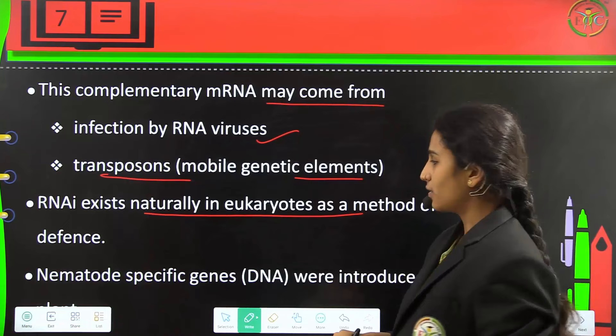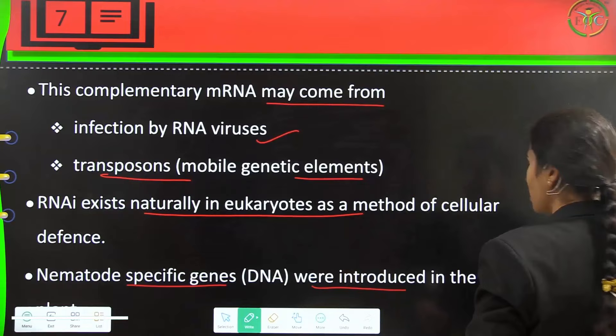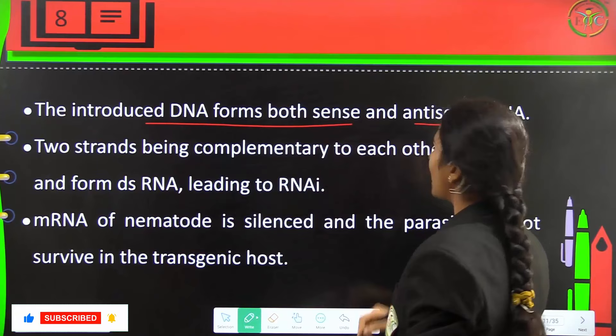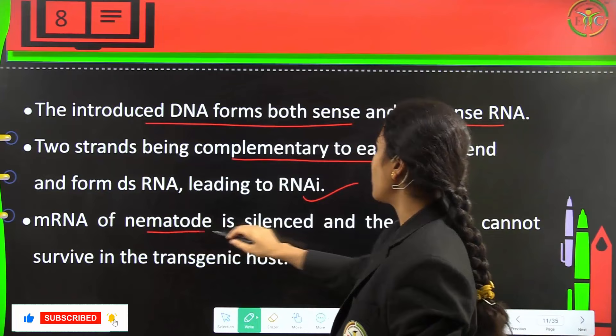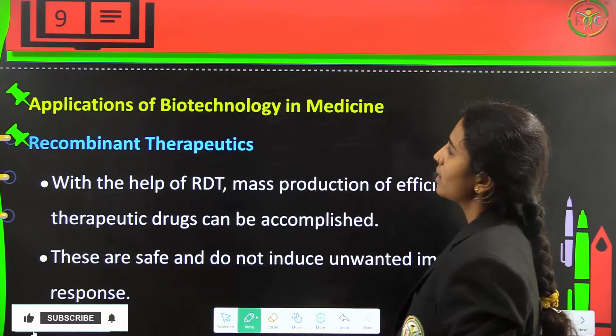Nematode-specific genes were introduced into the host plant. The introduced DNA forms both sense and antisense RNAs, and the two strands being complementary to each other bind and form double-stranded RNA, leading to RNAi. The mRNA of the nematode is silenced and the parasite cannot survive in the transgenic host.